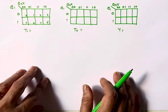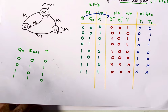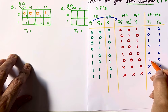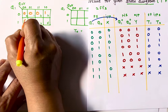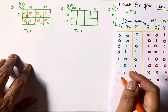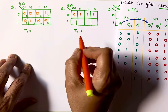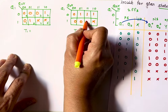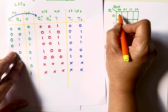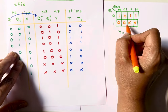For T1 the K-map values in order are: 0, 0, 1, 0, 0, 0, 1, 0 with don't cares in the last two positions. For T0 the values are: 0, 1, 1, 1, 1, 0, 0 followed by don't cares. For Y the values are: 1, 0, 1, 1, 1, 1, 0, 1 followed by don't cares.